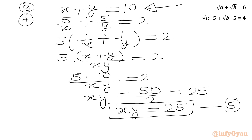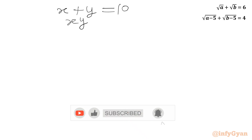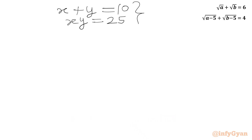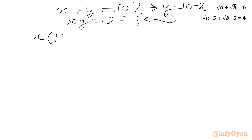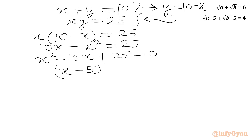Now we have equation 3: x plus y equals 10, and equation 5: xy equals 25. From equation 3, y equals 10 minus x. Substituting into xy equals 25: x times (10 minus x) equals 25, so 10x minus x squared equals 25. Taking all terms to the right-hand side: x squared minus 10x plus 25 equals 0. This is a perfect square — (x minus 5) squared equals 0.